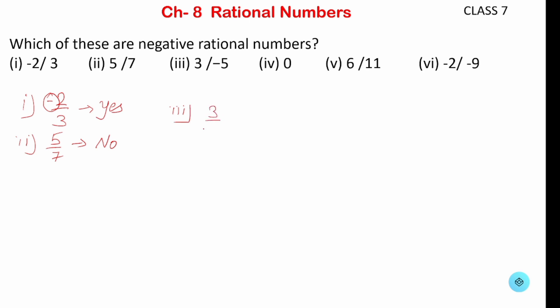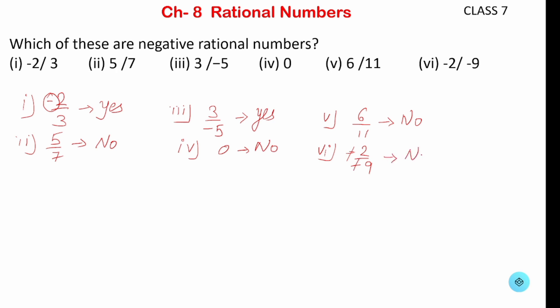The third one is 3 upon minus 5. As I told you, when the negative sign is in the denominator, it is not a negative rational number — it is positive. Then 6 upon 11 — no negative sign, so it is a positive rational number. Then minus 12 upon minus 9 — the two minus signs cancel, so it is also not negative; it becomes positive. For a negative rational number, there should be only one minus sign, either in the numerator or in the denominator.